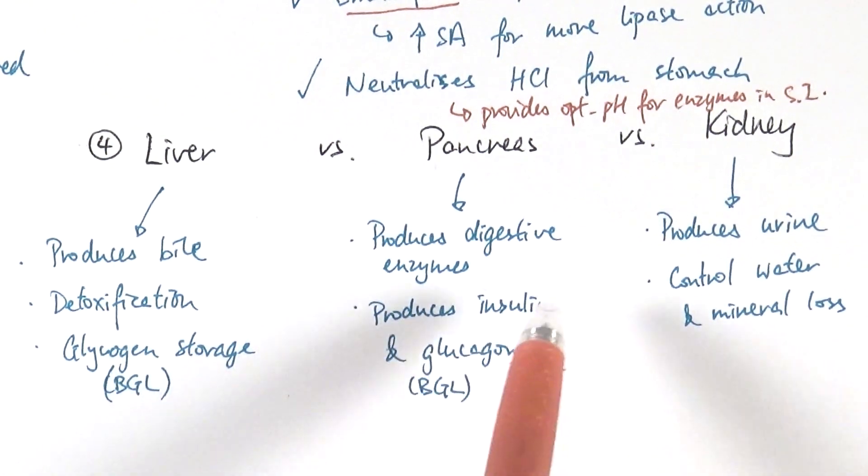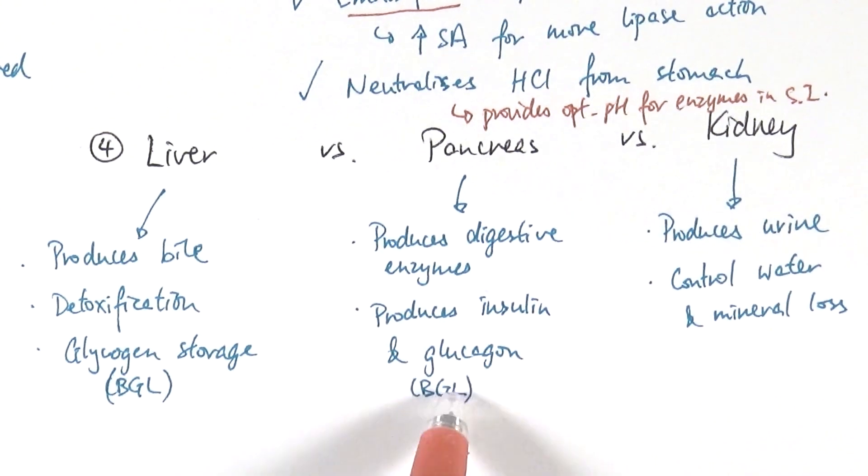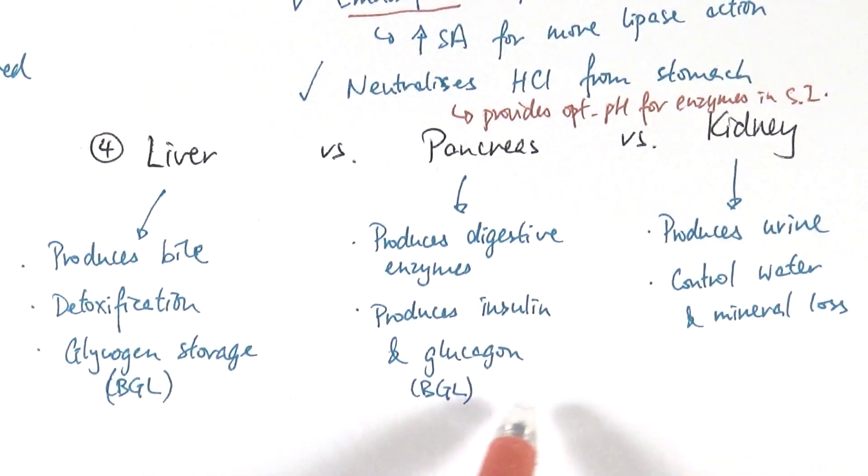But it can also produce insulin and glucagon, which are hormones, not enzymes, hormones that regulate blood glucose level. There's a whole chapter called chapter 11 about regulation of blood glucose level, which we'll come onto that later on. And this is where it links up.